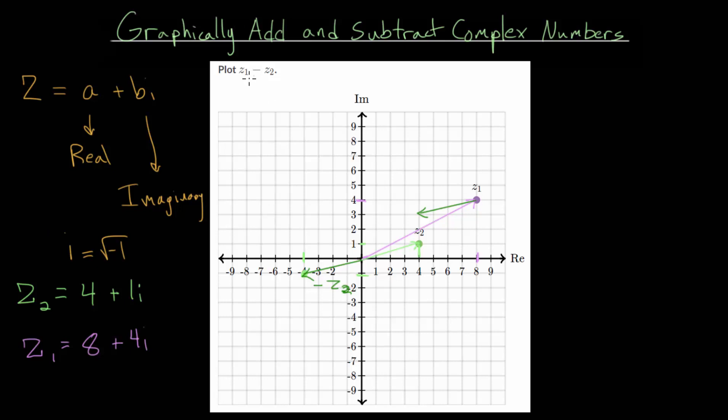And where this vector ends will tell us the difference between these two complex numbers. So this difference, which let's draw that in blue, will be the vector from the origin to the end of this second vector that we subtracted. And this point right here, this is our difference. This is z1 minus z2. And notice that it has a real part of 4 and an imaginary part of 3i. So this is equal to 4 plus 3i.